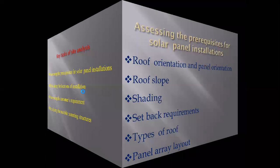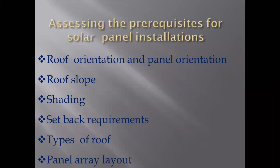First, we are assessing the prerequisites for solar panel installation. What we call roof orientation and panel orientation. We are collecting the roof orientation and panel orientation. We need to install panels from the top. So first, we have a roof orientation. We have a building with a roof, and we set the south direction.